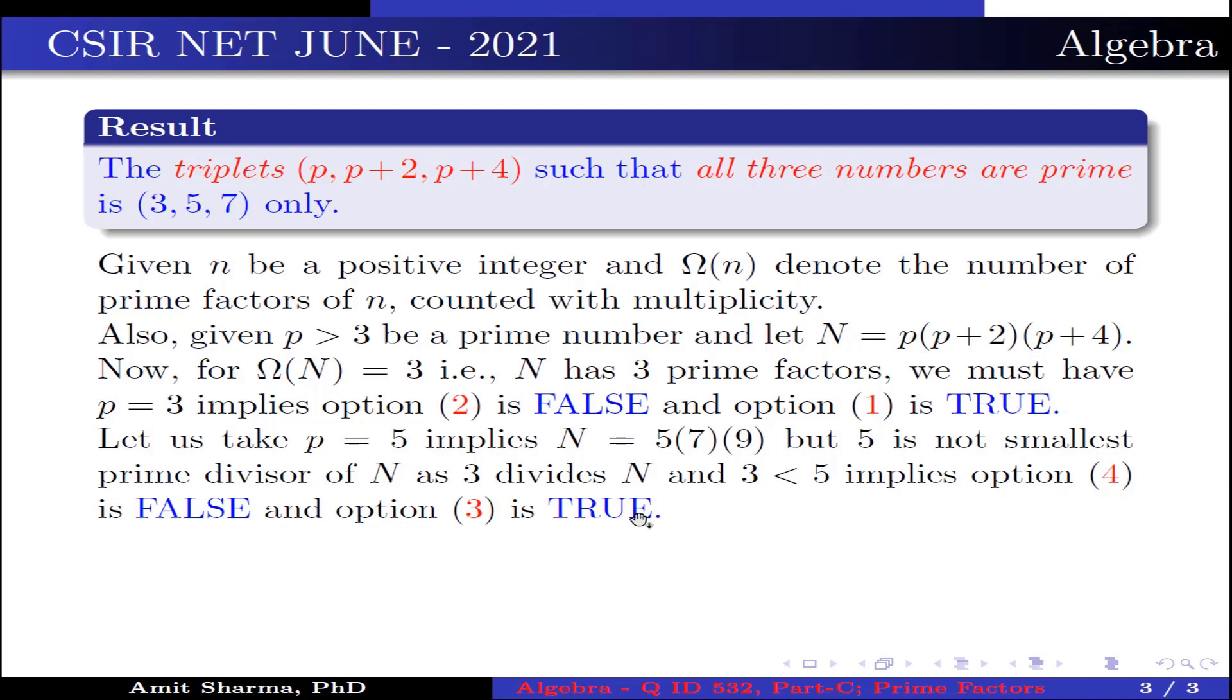Why? Because if we take any prime number greater than 3, then either p+2 or p+4 becomes a composite number. That's why we cannot get p as the smallest prime divisor of N. Hence, options 1 and 3 are true.